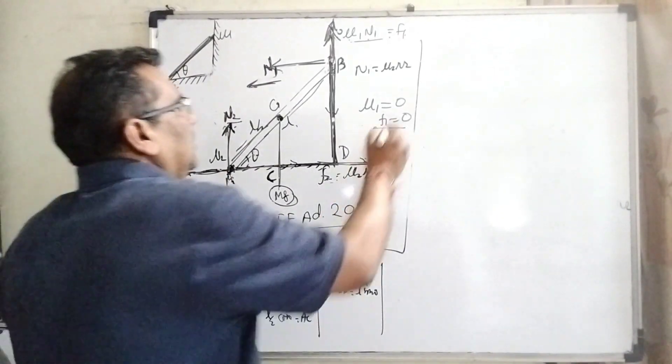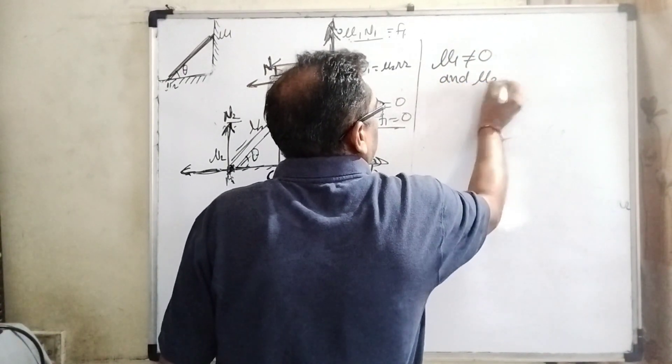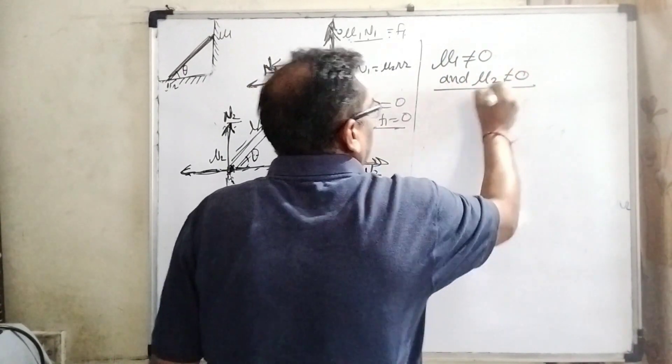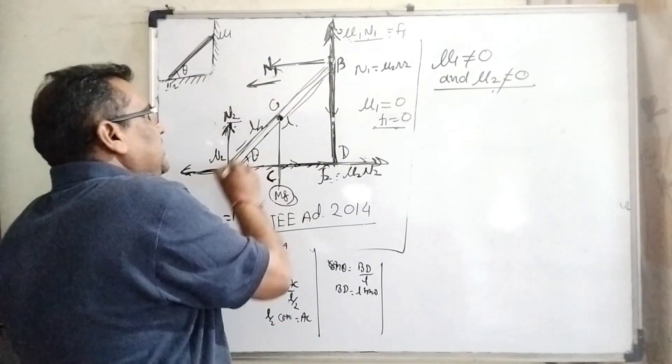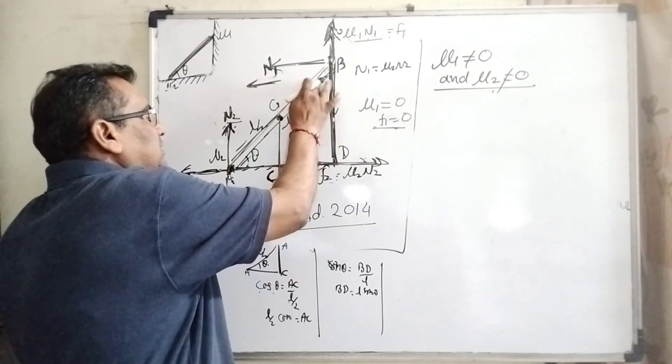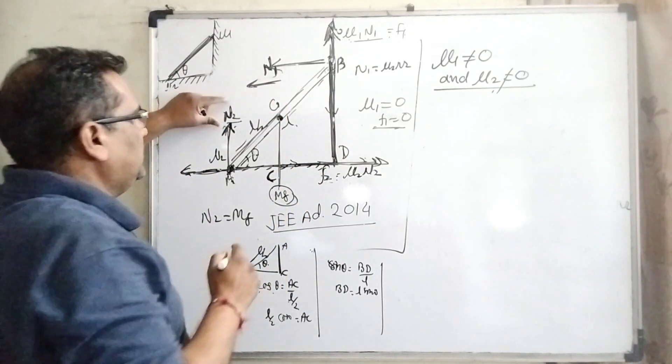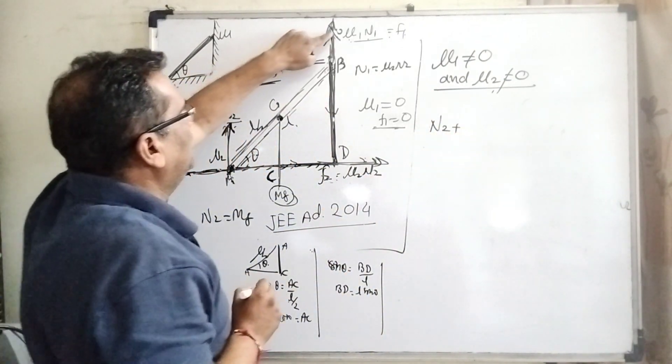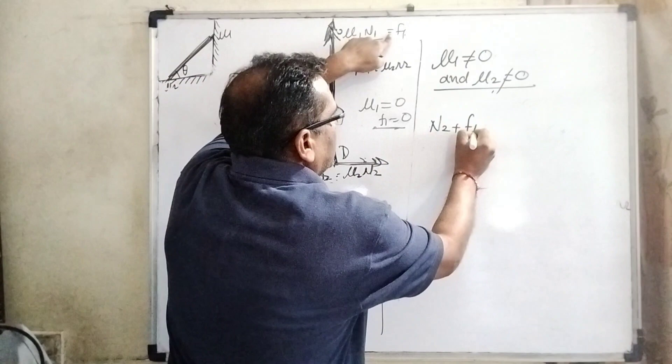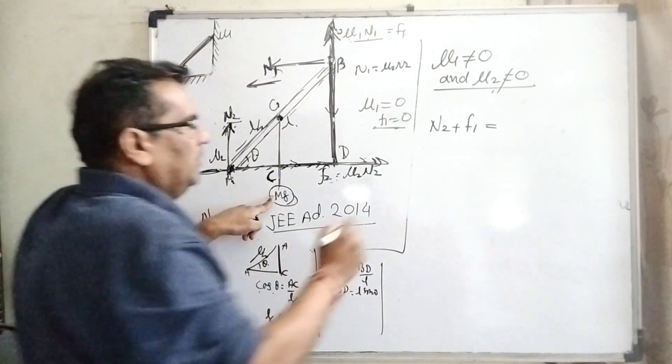Let's see for the next condition. Mu1 is not equal to 0 and mu2 is not equal to 0. So in that case, this ladder is balanced, means it is still raised. So in that case, upside forces, which upside forces? N2 is upside force and here f1 is also upside force.